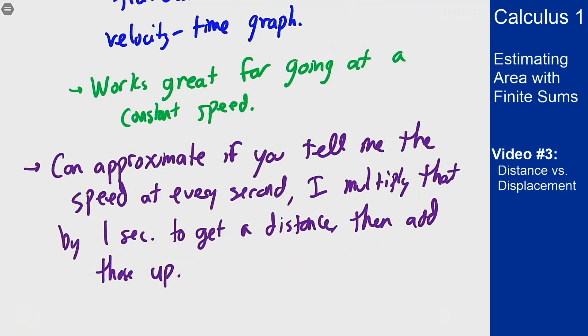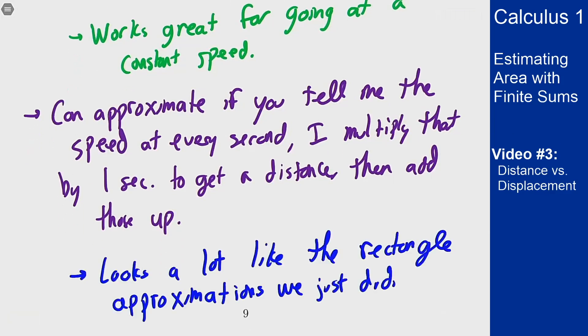But this process here looks a lot like what we did in the last video to approximate the area under curves. You tell me the height at every value of x that you care about, I multiply that by the width of the interval, and that gives me an approximation to the area when I add all those up. And so we can motivate the fact that this actually is the area under that curve because we can approximate the same way we approximated areas under curves before.